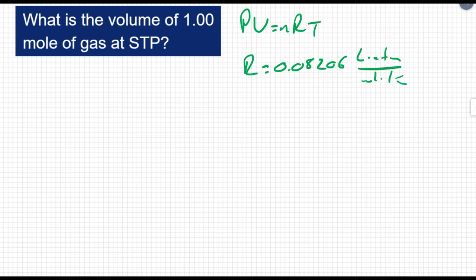To solve for the ideal gas law, we're going to isolate volume. PV equals nRT. I'm going to divide both sides by pressure. Volume is going to equal nRT over P.